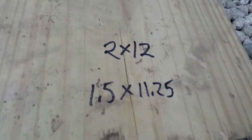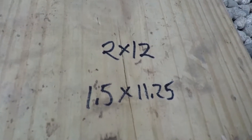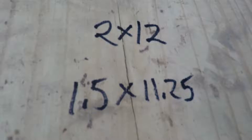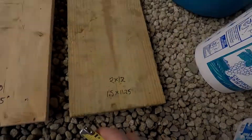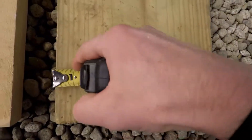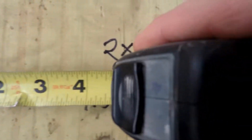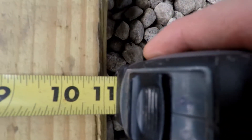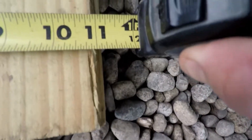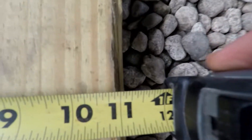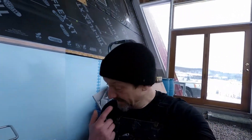The biggest one of them all is the two by twelve. That's 1.5 by 11.25 inches. Honestly, measuring this one here, it's about 11 and one-eighth inches.